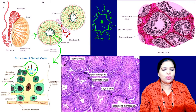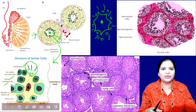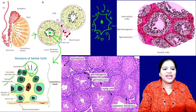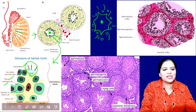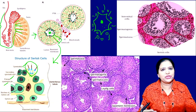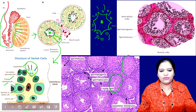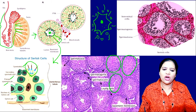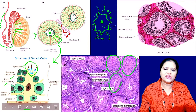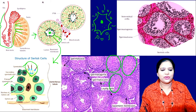Once the spermatids grow, they are released into the hollow area of the seminiferous tubule and come out. All the produced sperms come out, get collected, and travel through the vas deferens. In the actual histological picture of the testis cross-section, we can see round islands of tissue with different types of cells — spermatogonia, spermatocytes, and spermatozoa — in different layers.